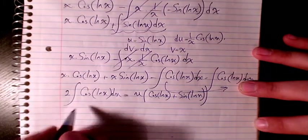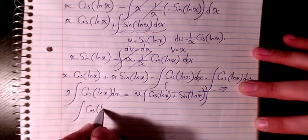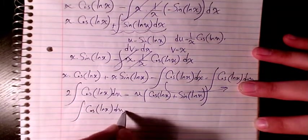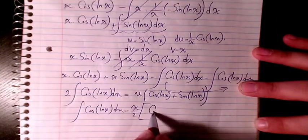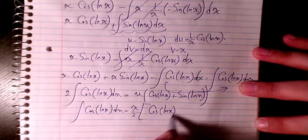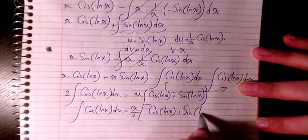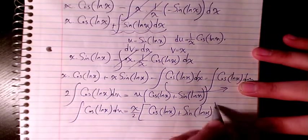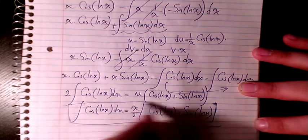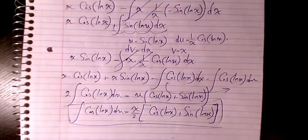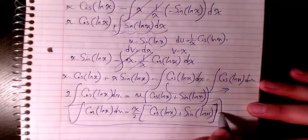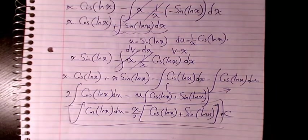So integration of cosine ln x dx will be x divided by 2 times cosine ln x plus sine ln x. That will be the answer to this question, and we need to put the constant value at the end too.